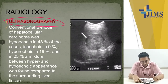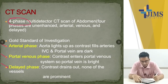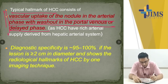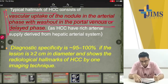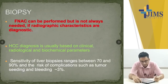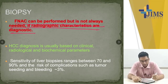For radiology, ultrasonography is used. CT scan — usually three-phase or four-phase CT is done: arterial phase, portal venous phase, and delayed phase. The typical hallmark is vascular uptake of the nodule in the arterial phase with washout in the portal venous or delayed phase. The nodule becomes hyperdense on arterial phase and then density decreases in the venous phase. FNAC can be performed but if radiographic characteristics are suggestive, diagnostic biopsy is not required. Diagnosis is usually based on clinical, radiological, and biochemical parameters.